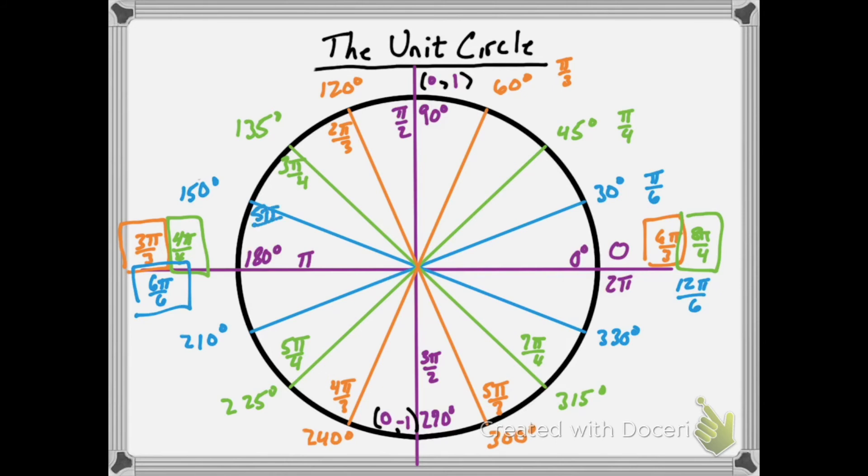For the blues, one less than 6 pi over 6 is 5 pi over 6, one more is 7 pi over 6, and in the fourth quadrant, one less than 12 pi over 6 would get us 11 pi over 6.